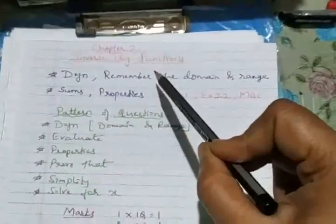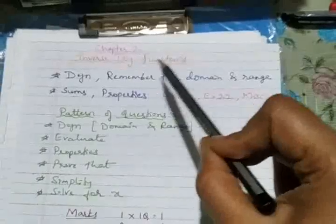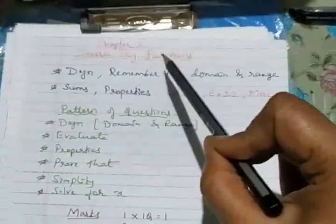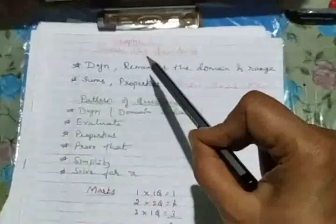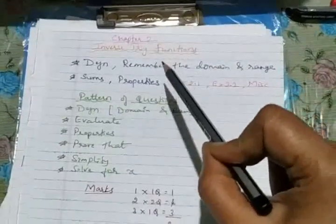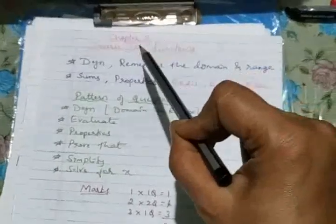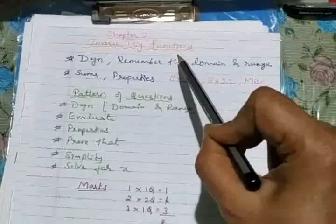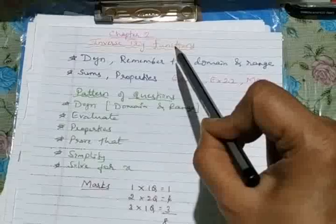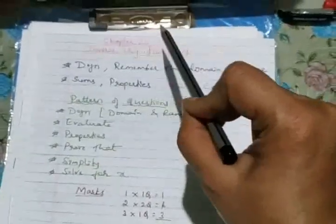I mean the six functions: sine function, cos function, tan function, cosecant function, sec function, as well as cot function. Once you are perfect in functions and trigonometric function, definitely I should ask you what do you mean by inverse function?